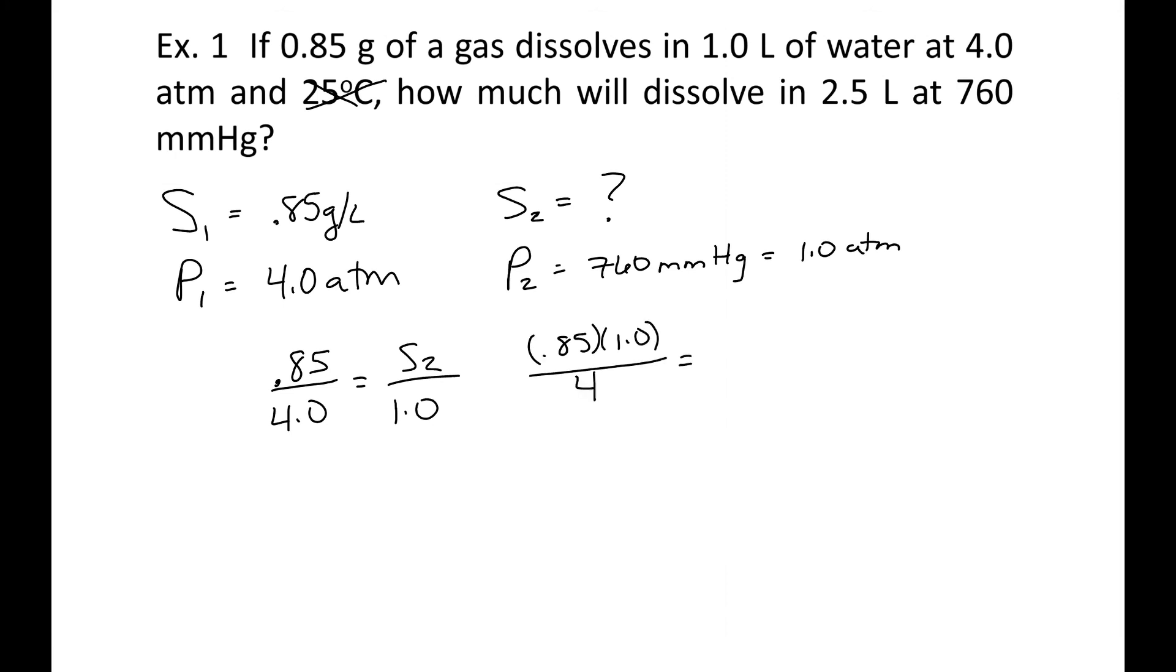And when we do that, we get a solubility of 0.21 grams per liter. That means at 1 atmosphere, 0.21 grams of your gas will dissolve in 1 liter of water. But I don't want 1 liter of water. I have 2.5 liters of water. So I'm going to multiply by 2.5, and now I get 0.53 grams of my gas.